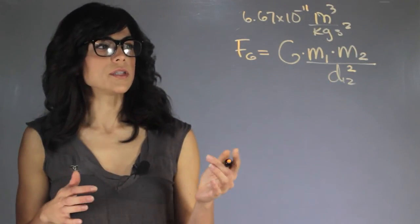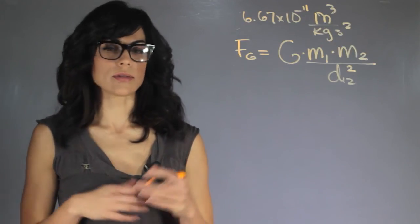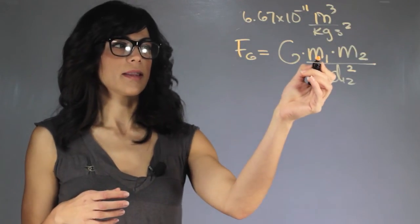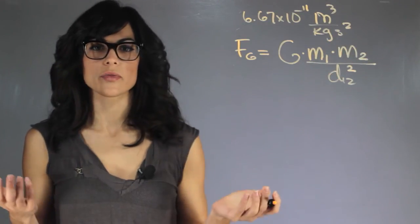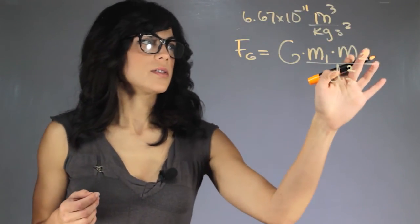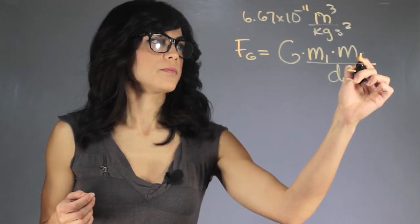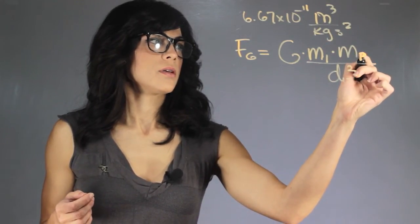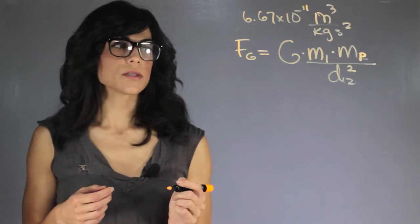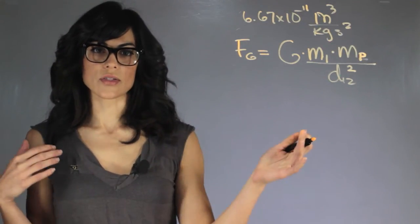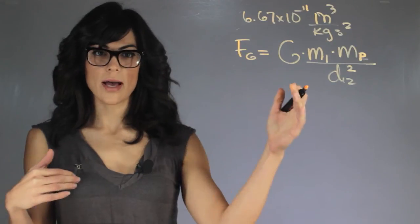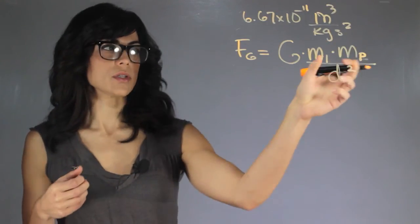Generally when we're looking at a planet, the first mass is a piece of rock on the surface, and the second one is the mass of the planet. It also has to do with how far you are from the object, the distance between them.